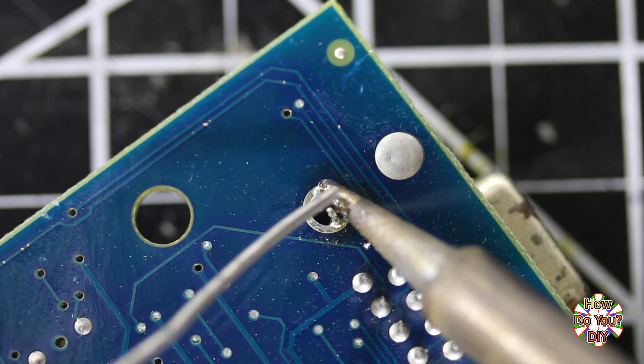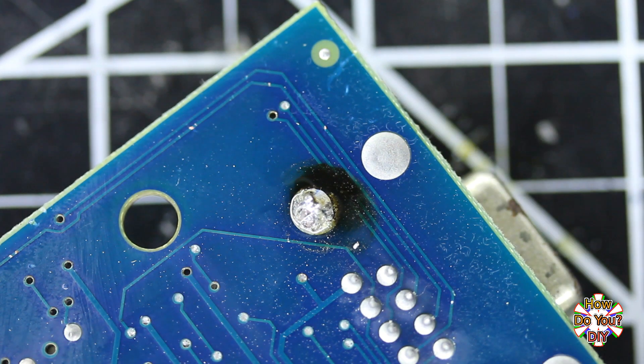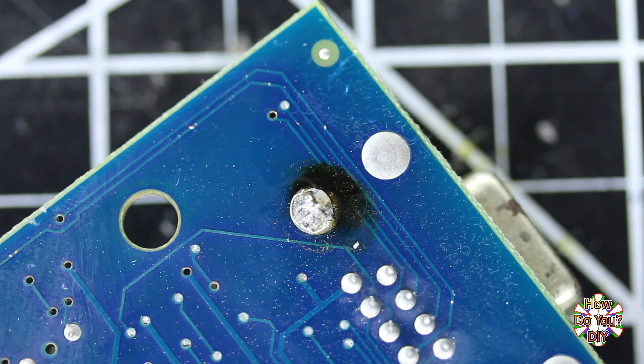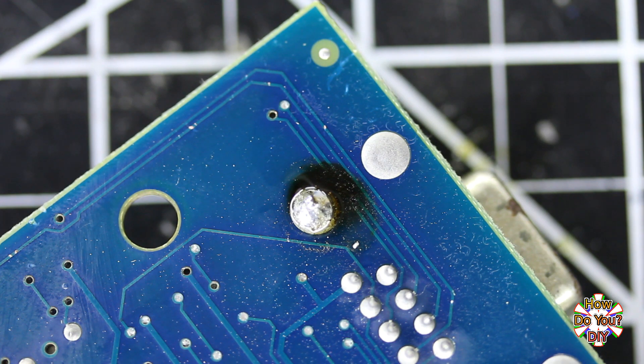There's another thing that I want to mention about using flux. You can see here that after I apply the solder, it looks like there's a burn mark on the board next to it. That's actually residue from the flux, and it should be cleaned off.